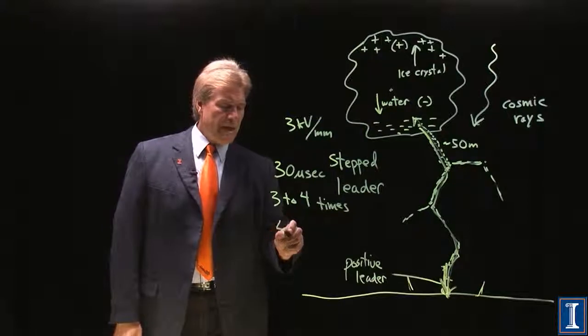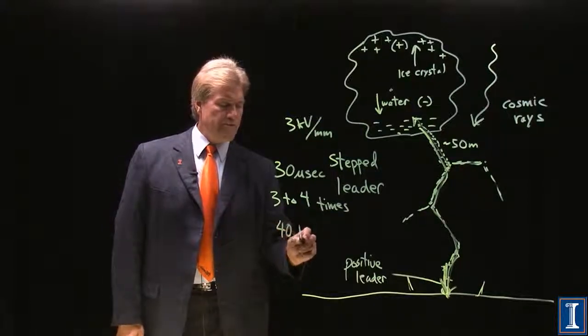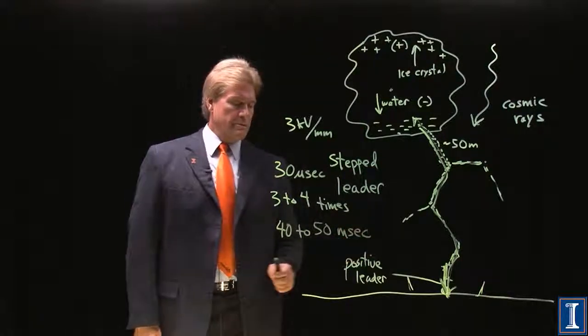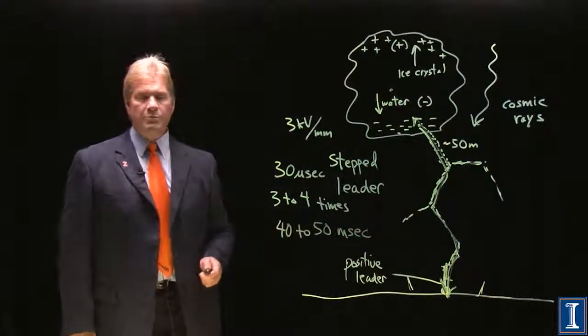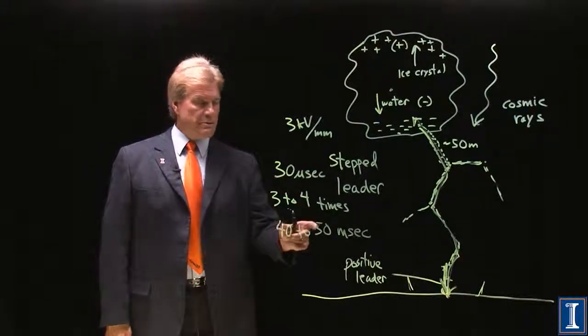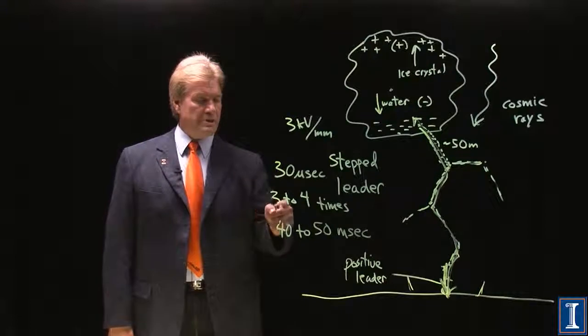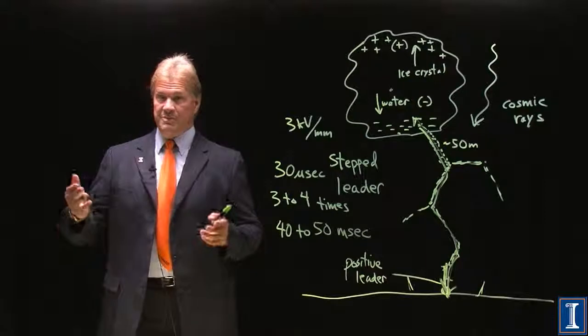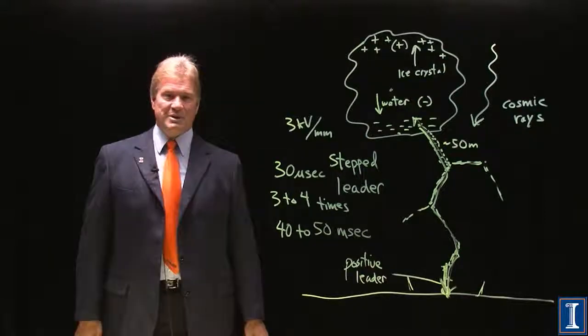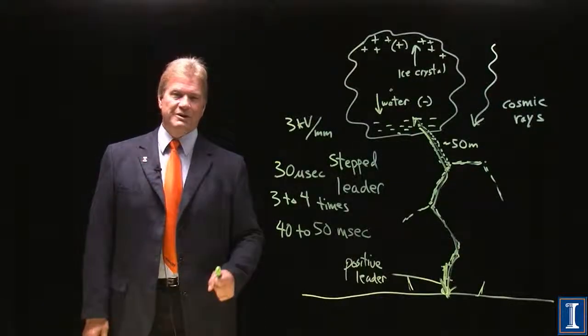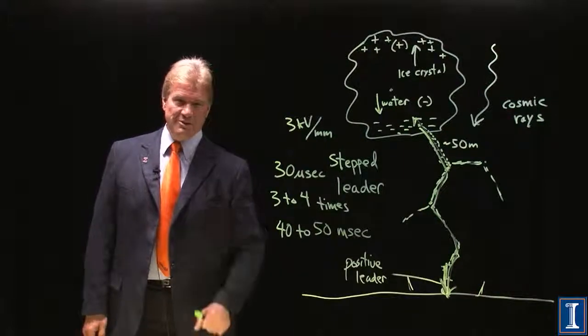And that takes place maybe 40 to 50 milliseconds apart, 0.04, 0.05 seconds, 20 times in a second. That's sort of the period it takes for each of these repetitions. So this is what's going on in a lightning bolt, or getting a shock, or playing with a plasma ball. Shock and awe, or at least shocks and lightning, and what you need to know about it.